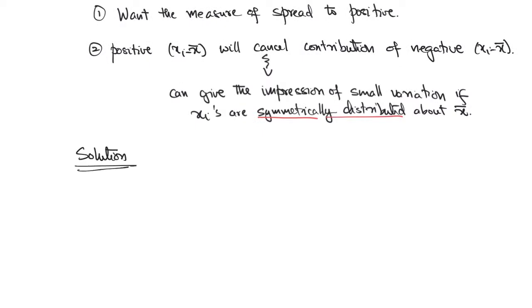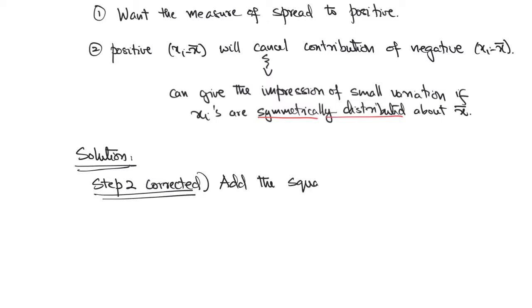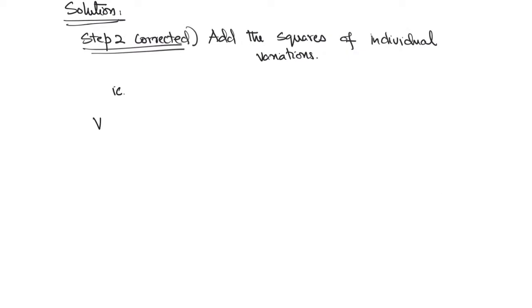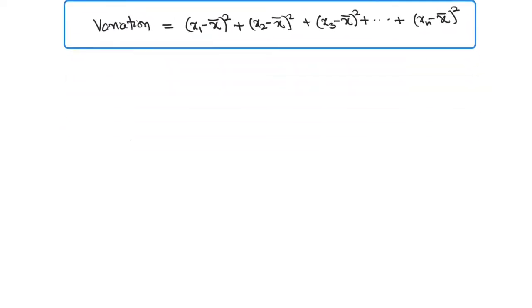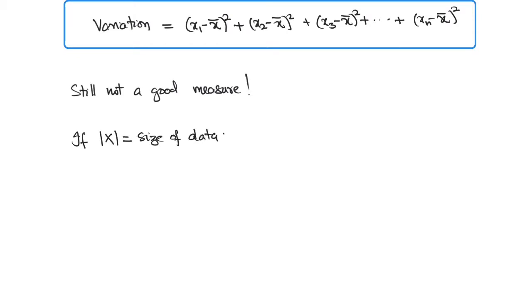One way to resolve this issue is to work with step 2 in a corrected form, which would be to square all the individual variations and then add them up together to get a measure of variation. That is, our variation is going to be the sum of x1 minus x-bar squared, plus x2 minus x-bar squared, all the way up to xn minus x-bar squared. While this step takes care of maintaining the positivity of the measure of variation and making sure there is no cancellation between the terms in the sum, this is still not a very good measure.